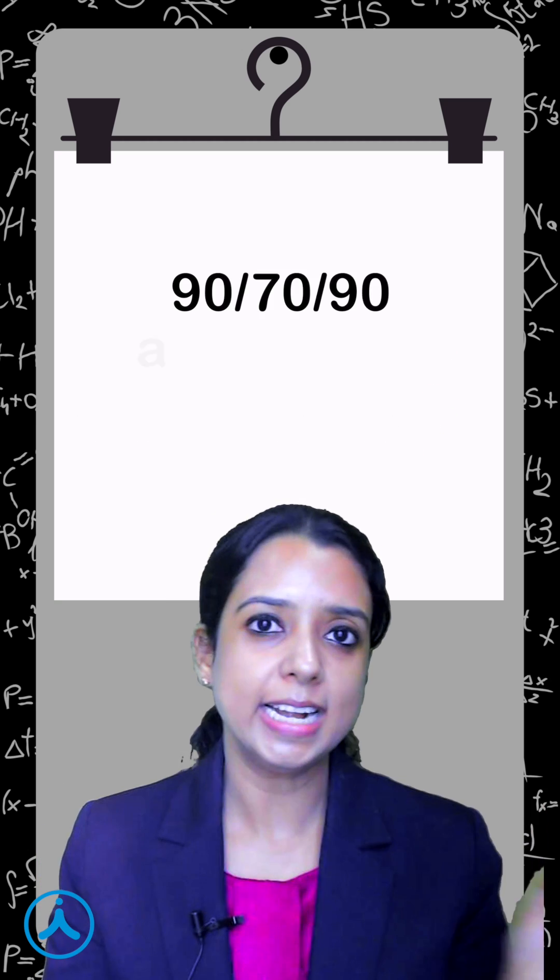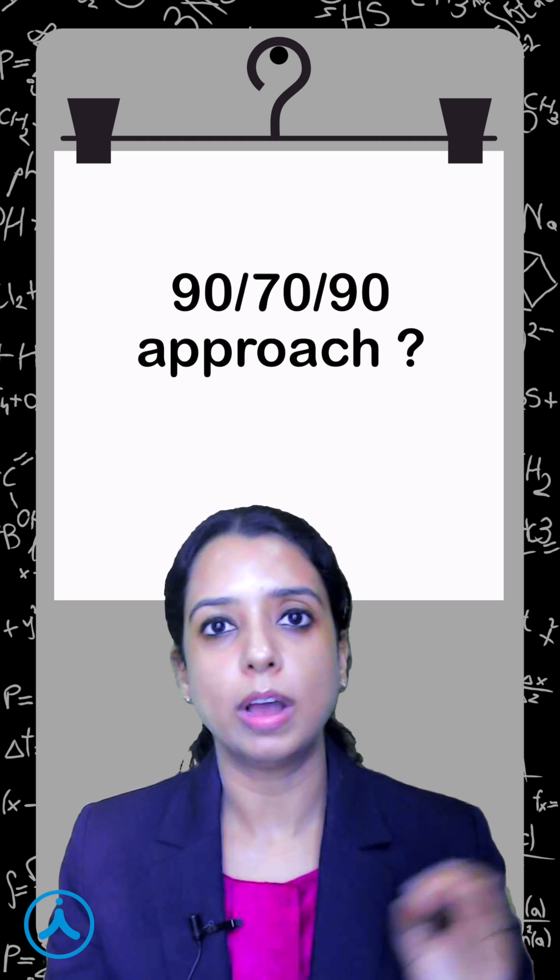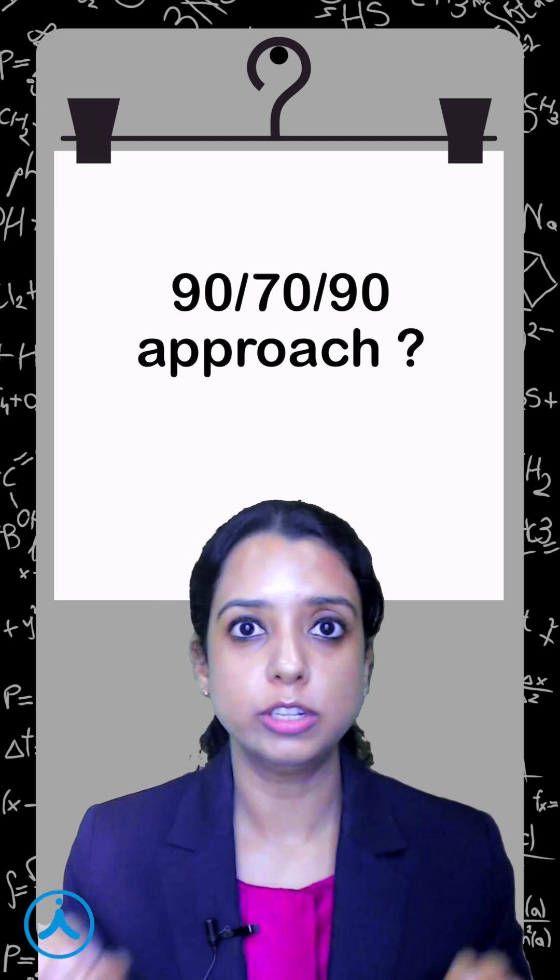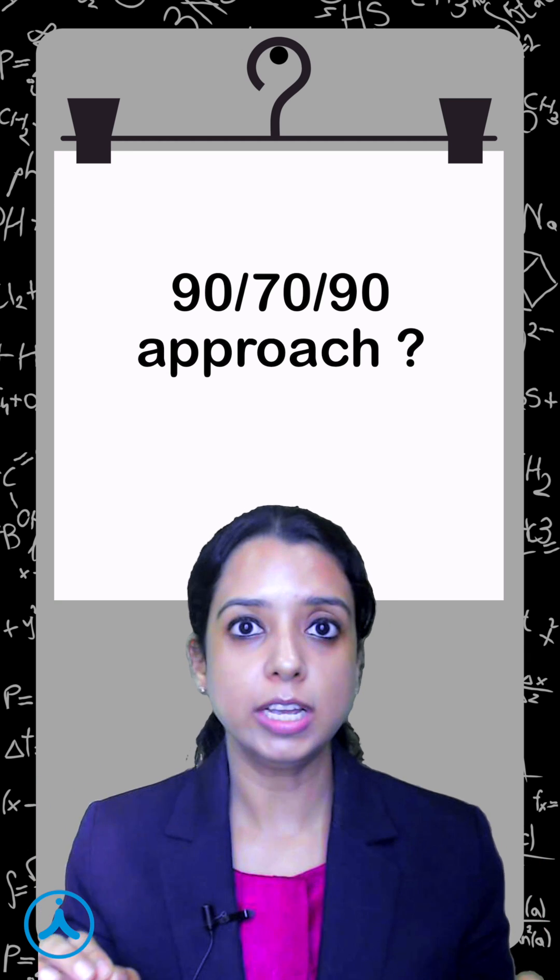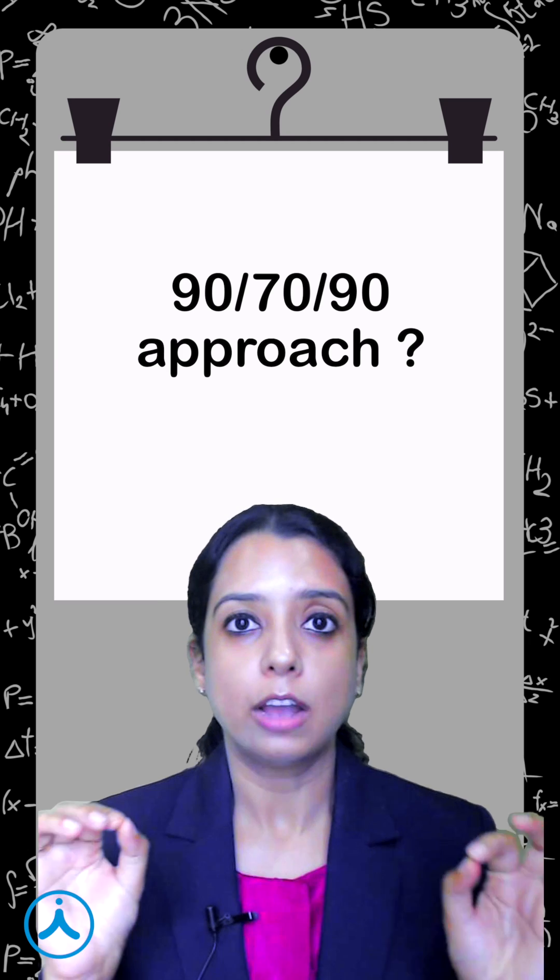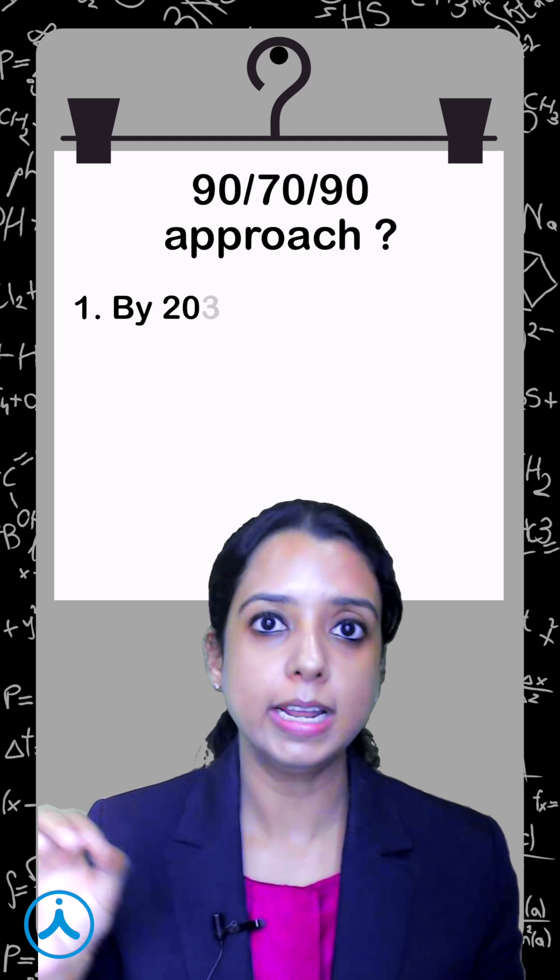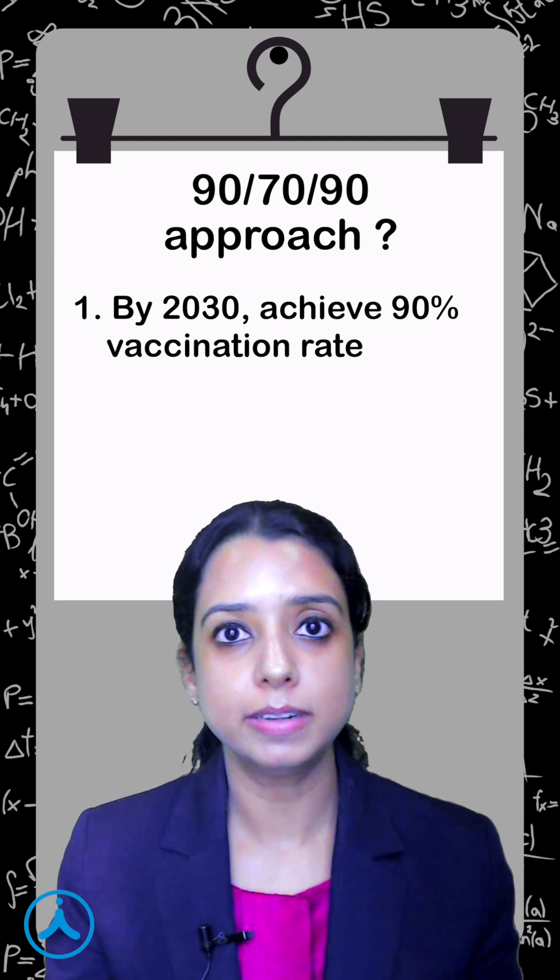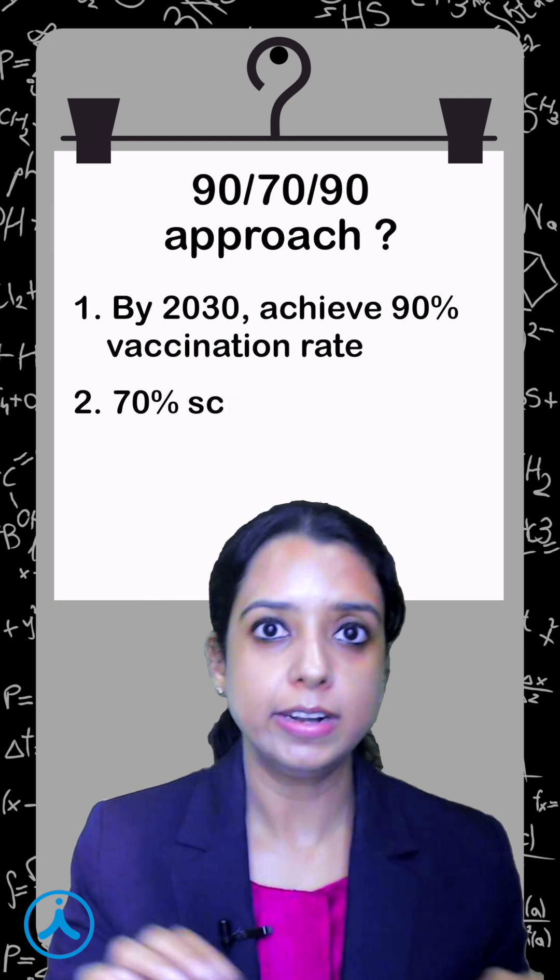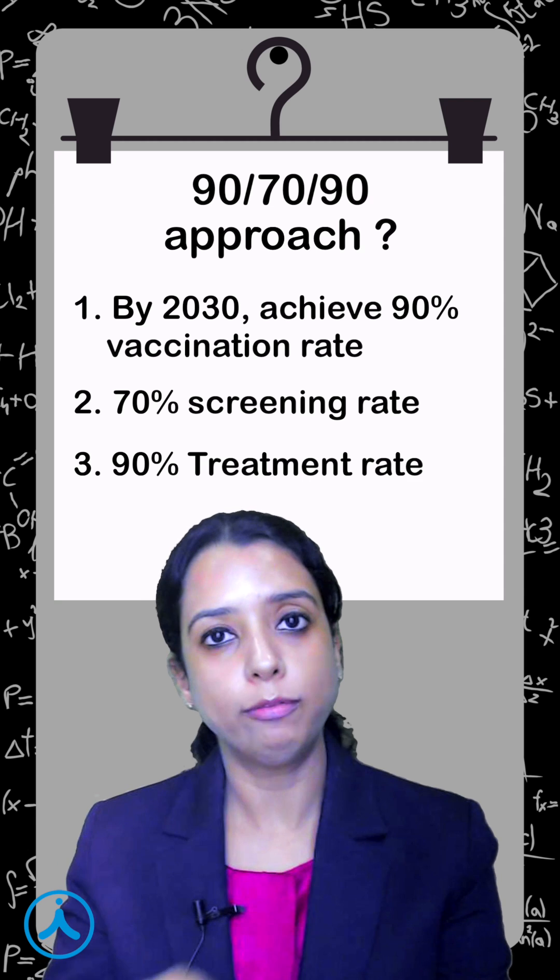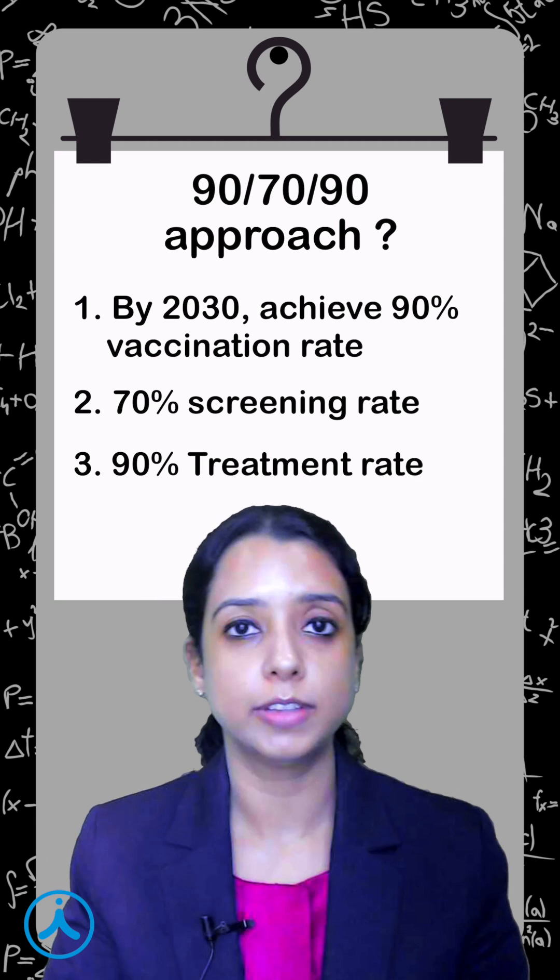What is the 90-70-90 approach to eliminate cervical cancer? In 2020, WHO adopted a strategy called the 90-70-90 strategy to eliminate cervical cancer. According to the strategy, by 2030, all countries have to attain 90% vaccination rate, 70% screening rate, and 90% treatment rate of all pre-invasive and invasive cervical cancer.